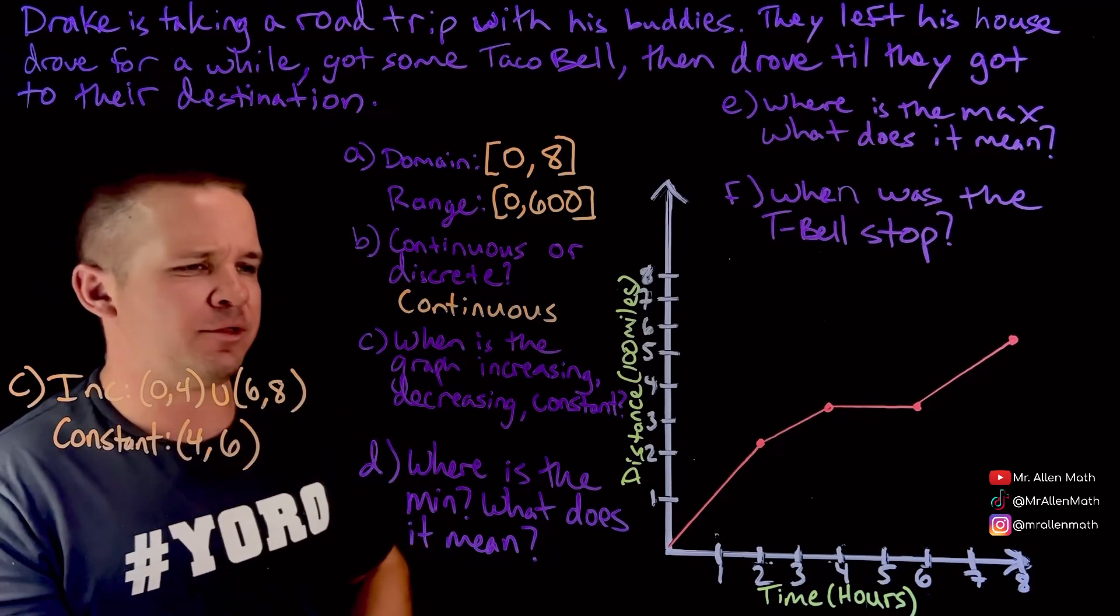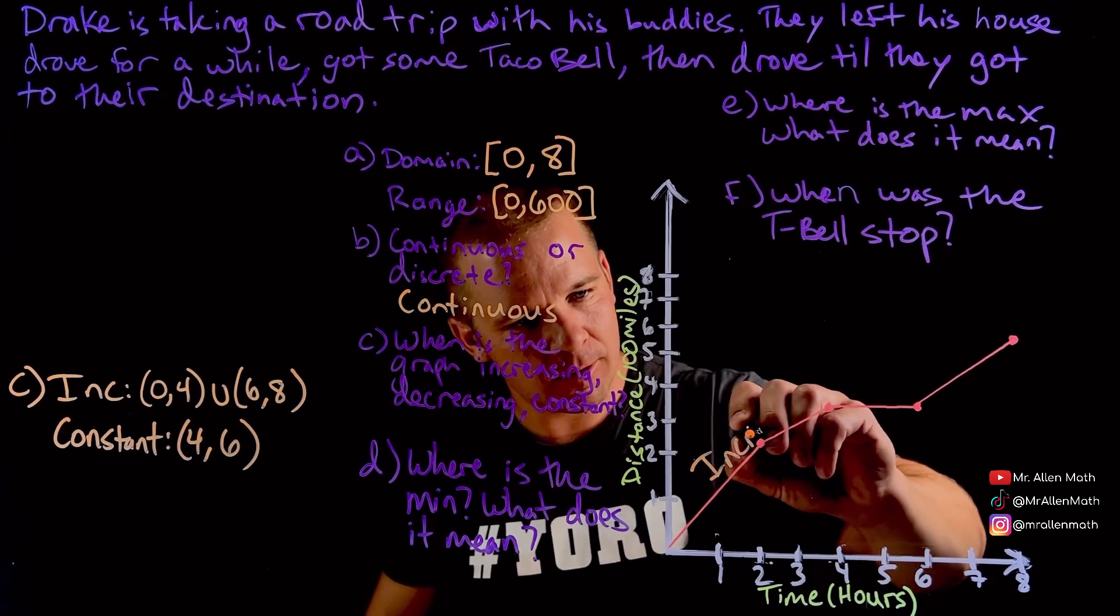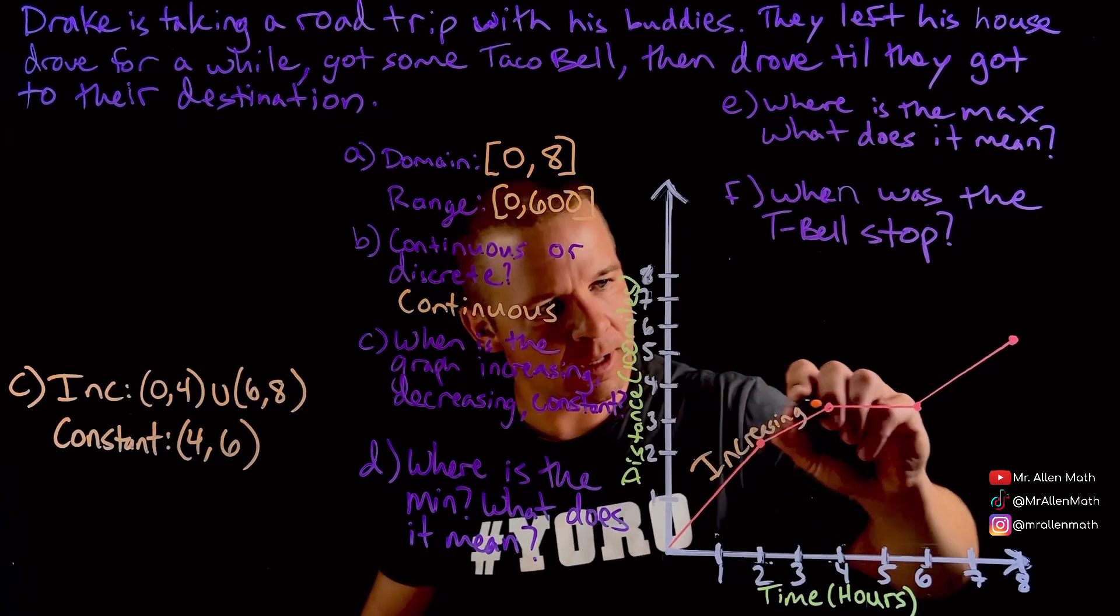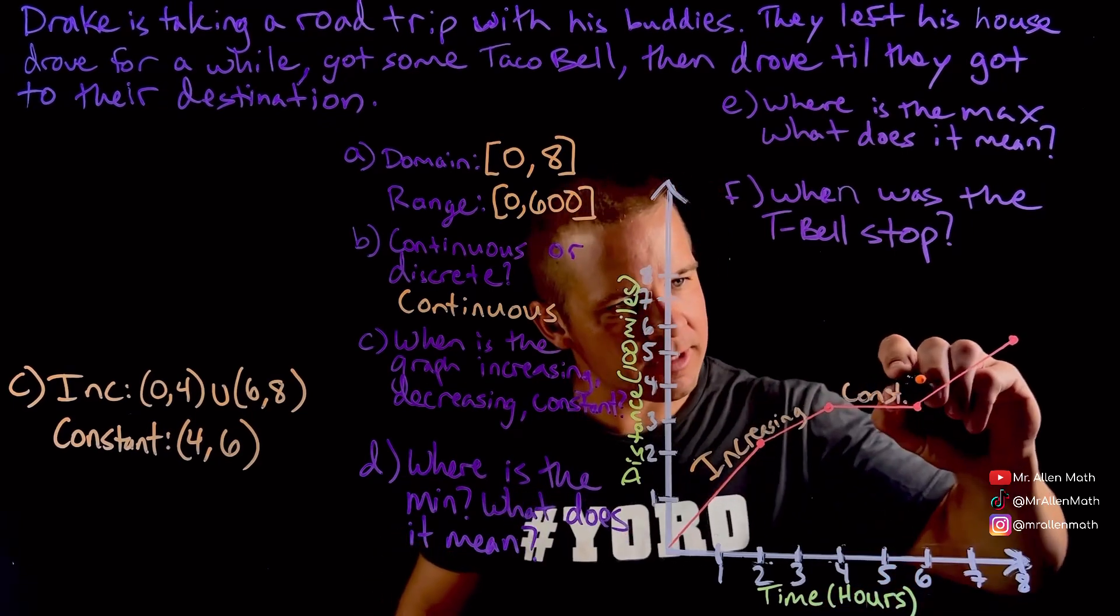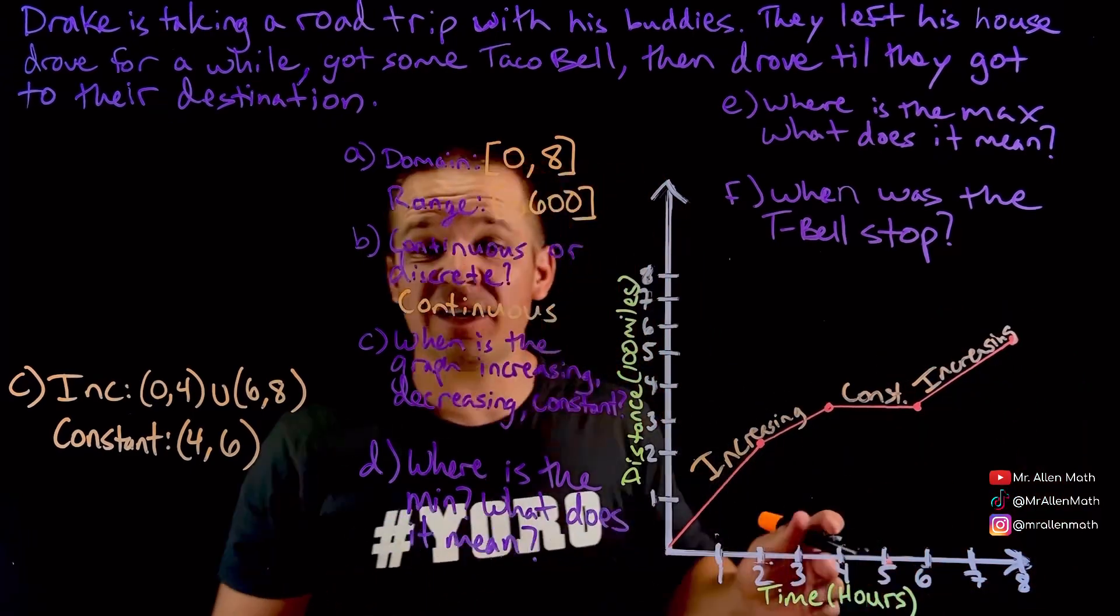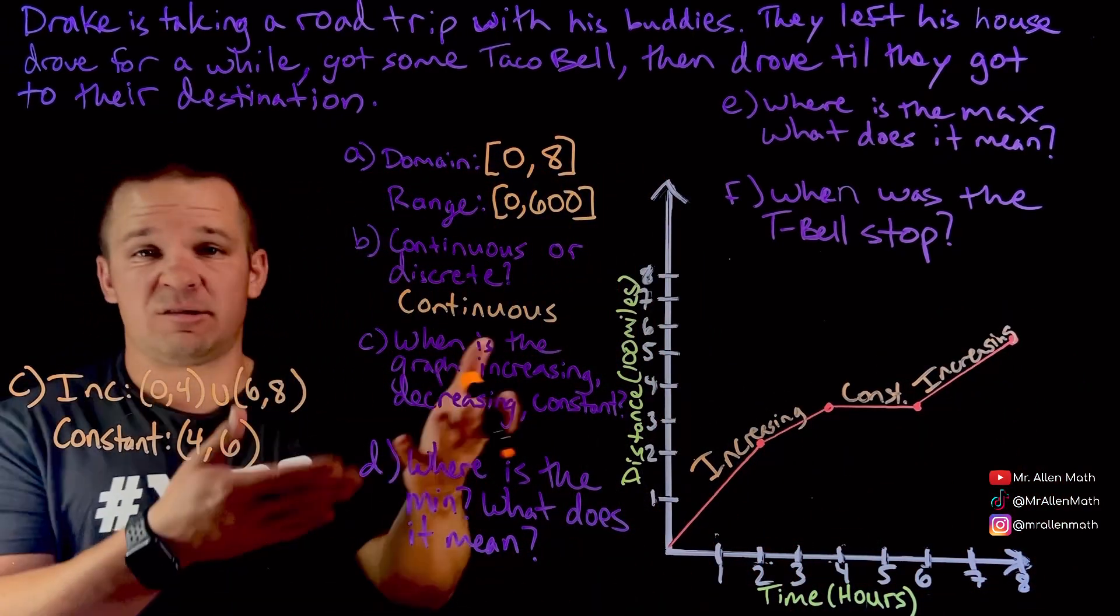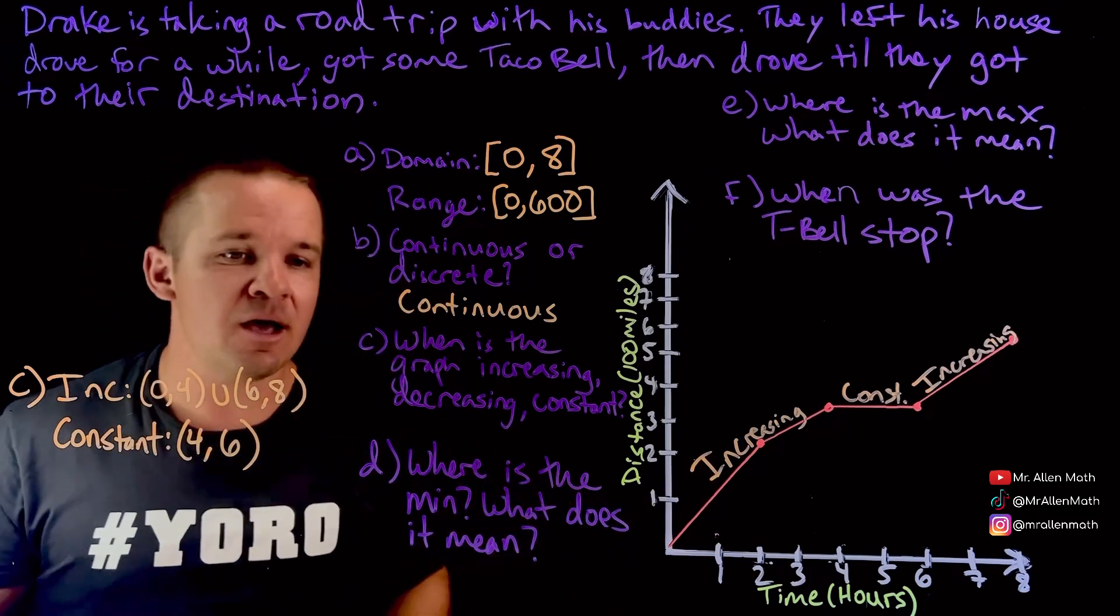I guess we could use brackets on that one there too. But again, I think we might want to just do like this. Let's see. Increasing. Constant. Increasing. Or they may just even ask you, what's the graph doing? Circle all that apply, right? Then we can just say it's increasing and it's constant at times.